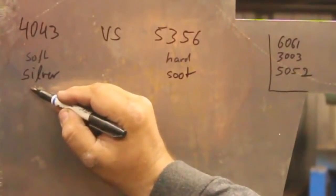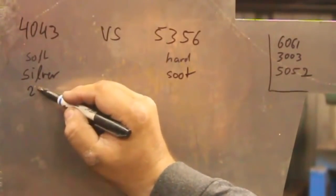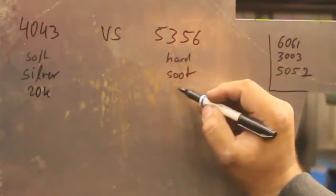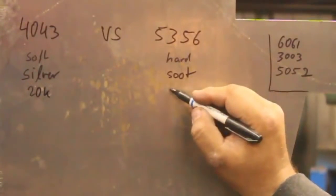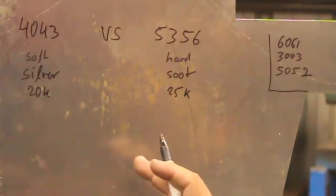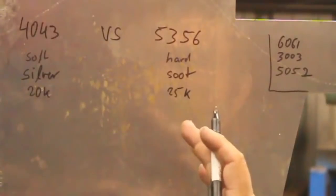4043, the tensile strength is around 20,000 PSI. 5356 is a few points higher, 25 or more, depending on how it's welded, dependent on how it's heat treated.